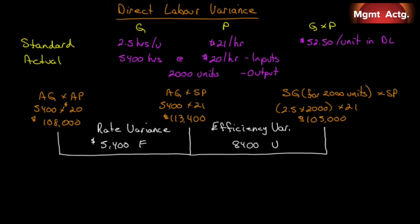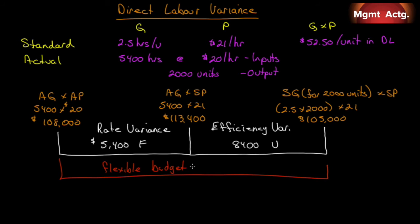Our flexible budget variance is $3,000 unfavorable. We can see that we saved money on labor, but the workers aren't that efficient. If you read the chapter vignette, they're concerned that new employees hired are not as qualified — and that's why costs are higher. You had a rate variance, yes, we paid $5,400 less, but they're not efficient. Sometimes it's worth paying more to get more efficiency.